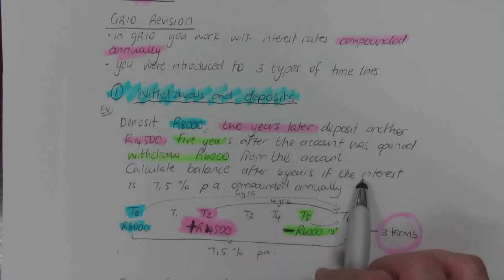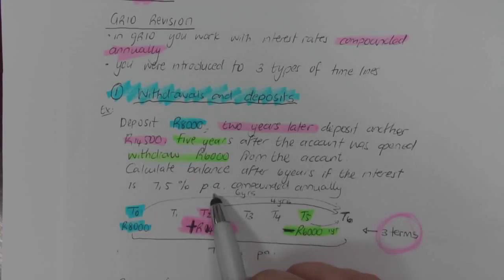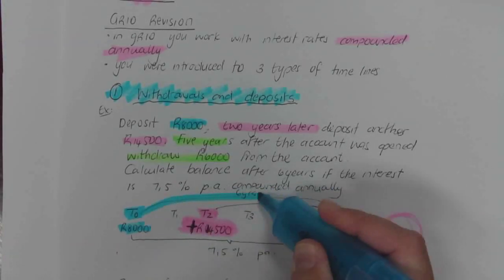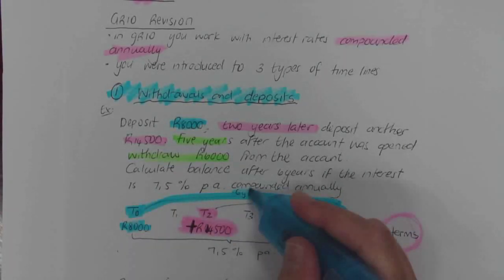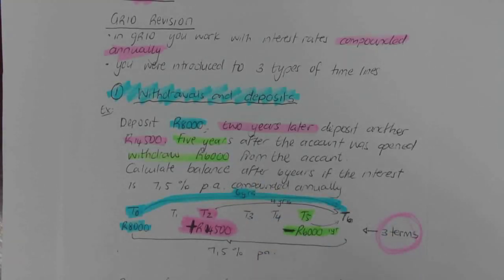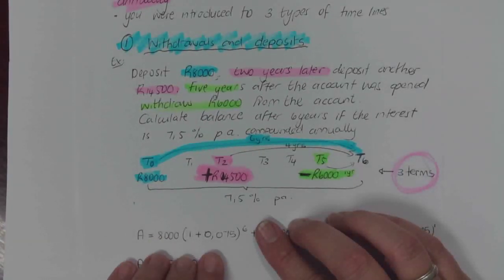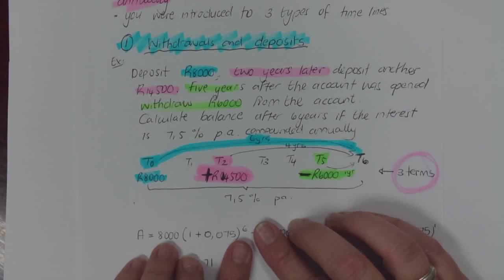The investment is for six years, which means I need to go up to T6, at seven and a half percent per annum compounded annually. This means that the R8,000 was part of the entire investment — so for six years R8,000 was part of the investment. When I write my compound formula, my P value is R8,000 at seven and a half percent for six years. That's my first term.